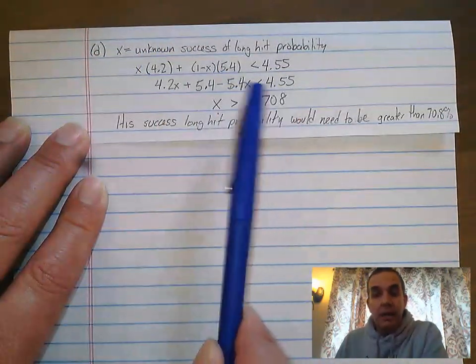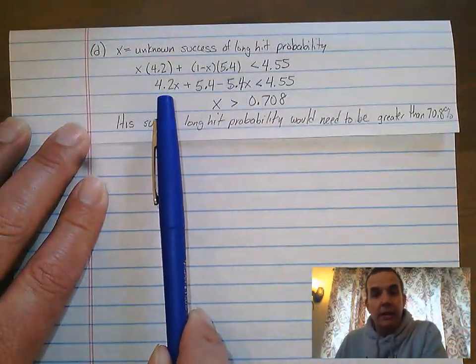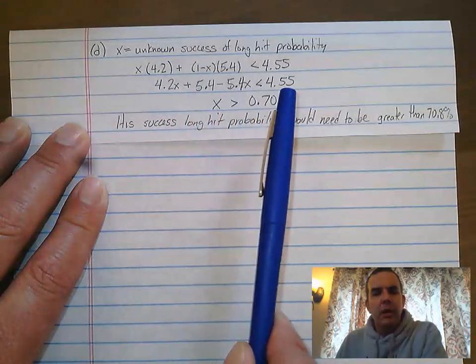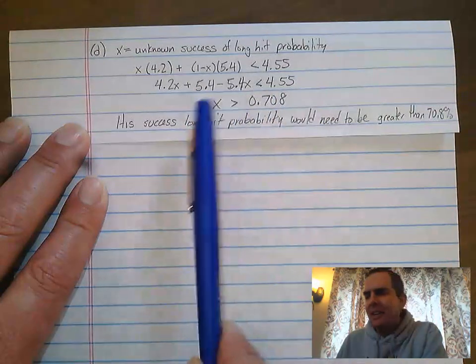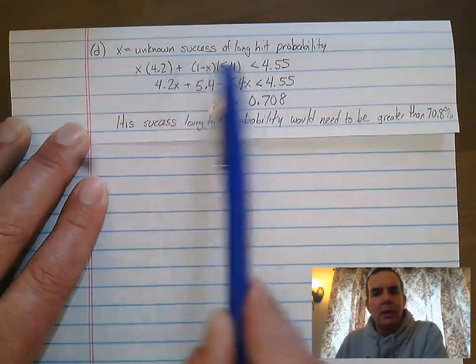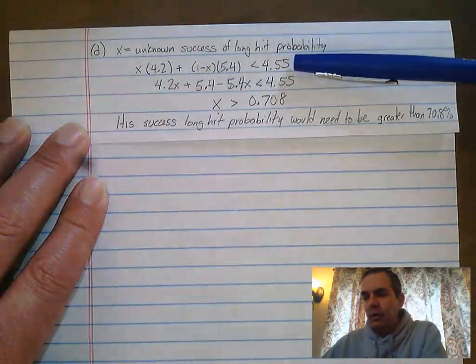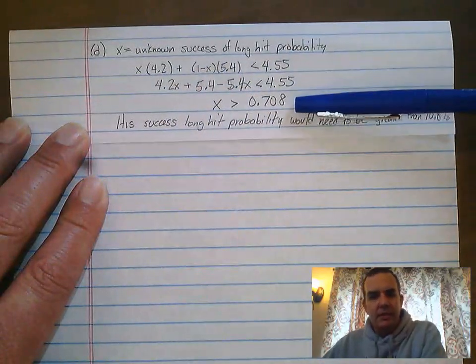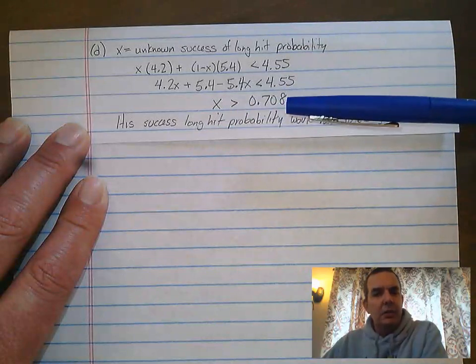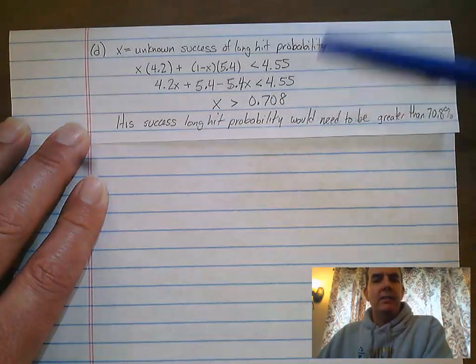Now this becomes Algebra 1. We have 4.2X plus 5.4 minus 5.4X is less than 4.55. I skipped a few steps. You don't have to show every step in the work, you just have to show how you set it up. What ends up happening is X has to be greater than 0.708.